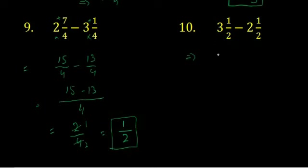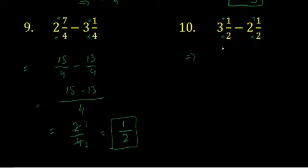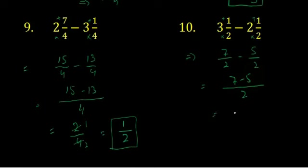In question number 10, the last question: 2 multiplied by 3 is 6, plus 1 is 7 — giving 7 upon 2. And 2 twos are 4, plus 1 is 5 — giving 5 upon 2. The denominator is the same, so we write it once. 7 minus 5 is 2 upon 2. Dividing both by 2: the answer is 1 upon 1, or simply 1 is the answer.